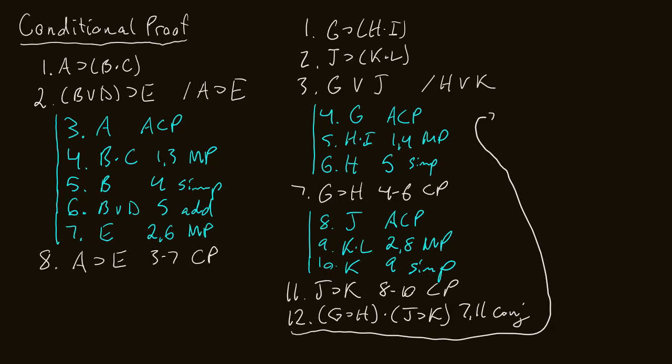From lines three and twelve and a constructive dilemma, on line thirteen we can argue H or K — and there we go, we reached exactly what we wanted to reach: H or K, using not one but two conditional proofs in our argument. To me, that's a pretty cool thing. I hope it's cool to you too and was easy to understand. If you made it to the end of this video, thank you for watching — I truly appreciate it and I hope you learned something.